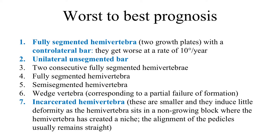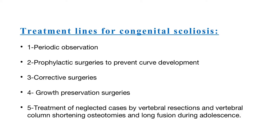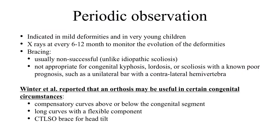We should also know which types carry the worst prognosis and which we can treat with observation. Fully segmented hemivertebra with two growth plates plus a contralateral bar has the worst prognosis, followed by unilateral unsegmented bar. Last but not least, incarcerated hemivertebra has the best prognosis.